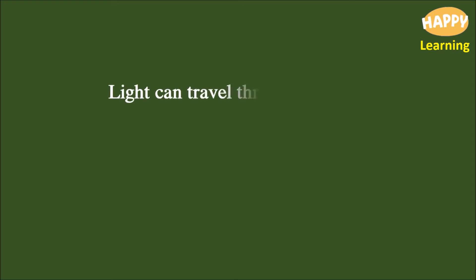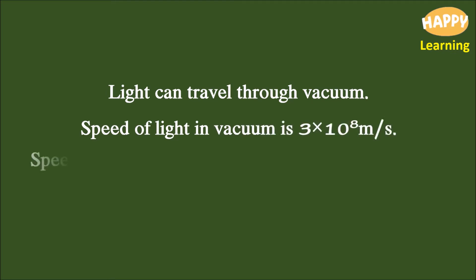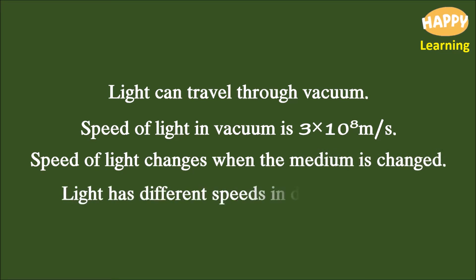Light can travel through vacuum. The speed of light in vacuum is 3 × 10⁸ meters per second. The speed of light changes when the medium is changed — light has different speeds in different media.